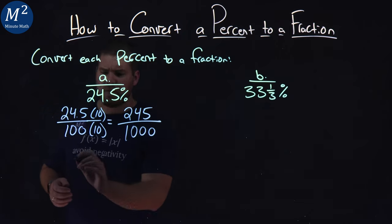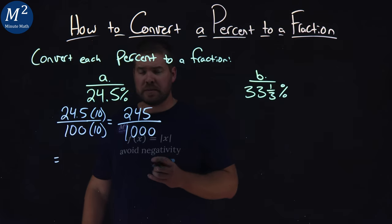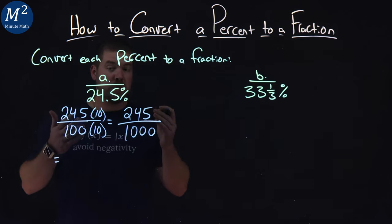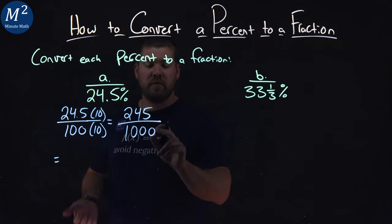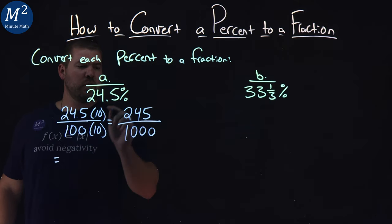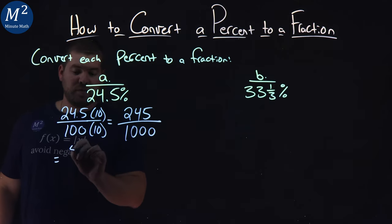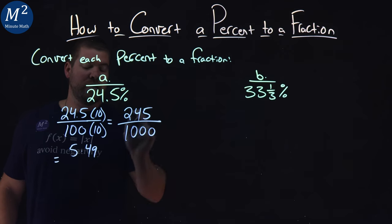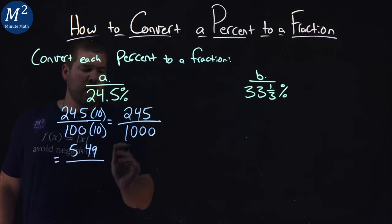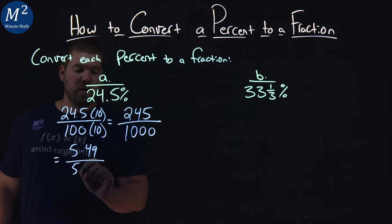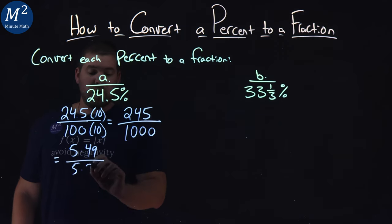Well, now we have to simplify this. 245 and 1,000. Well, both numbers are divisible by 5. They end in 5 or a 0 here. So, 245 divided by 5 is actually 5 times 49, or 245 divided by 5 is 49. And 1,000, 5 goes into 1,000 200 times.